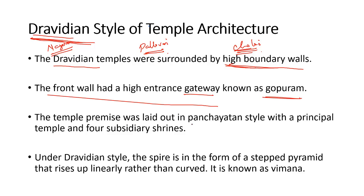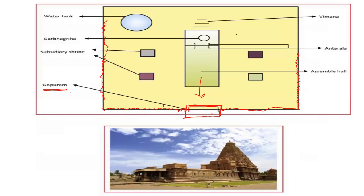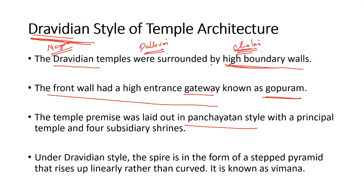The style of temple premises is Panchayatan style. Here we can see the main deity shrine, and adjacent to it are four subsidiary shrines. This style of temple architecture is called Panchayatan style, which was present in Nagara style of architecture also. Apart from that, in Dravidian style of architecture there is a mountain spire — in Nagara it is called Shikhara, which is curvilinear with an Amalaka and Kalasha on top.